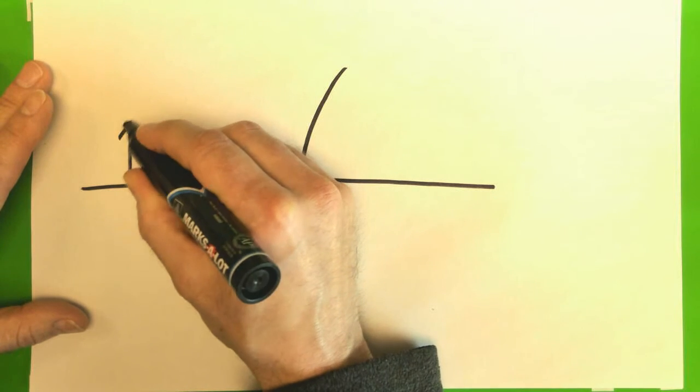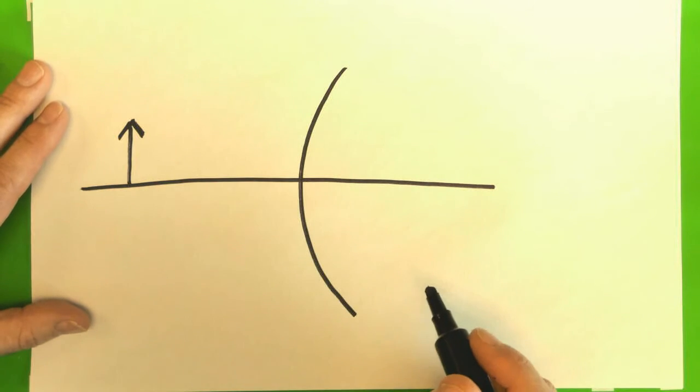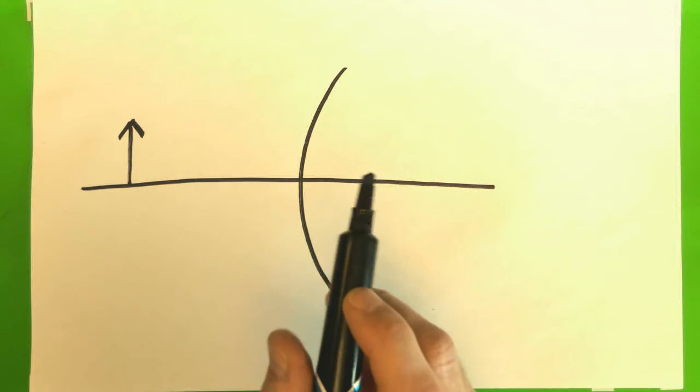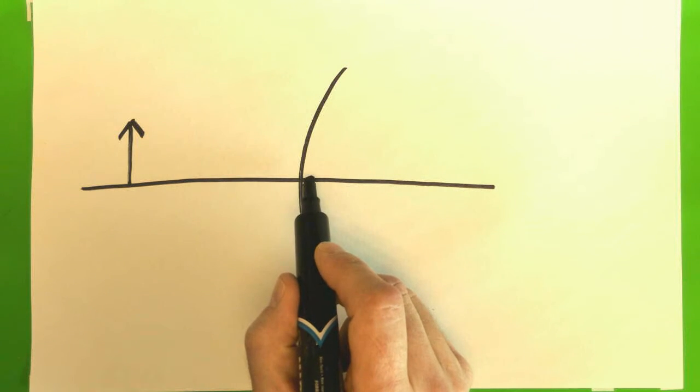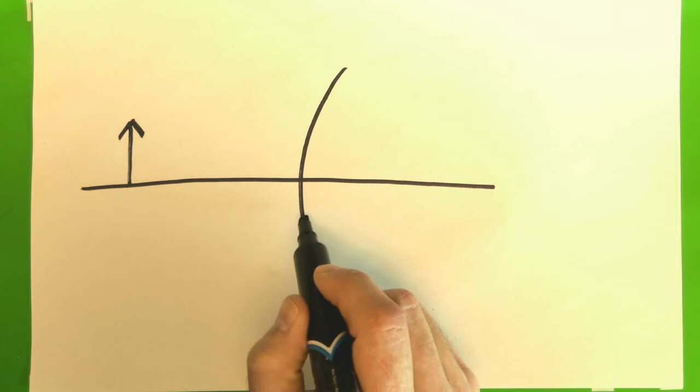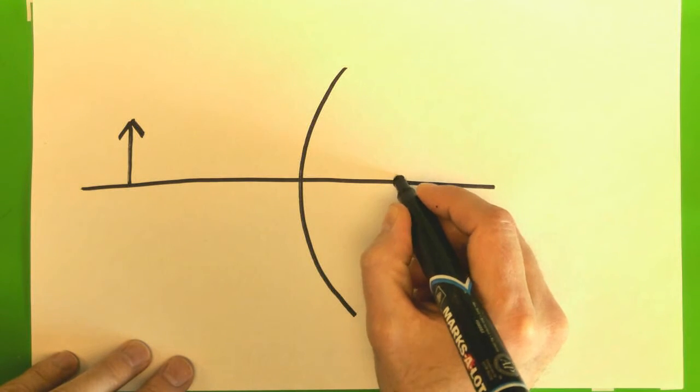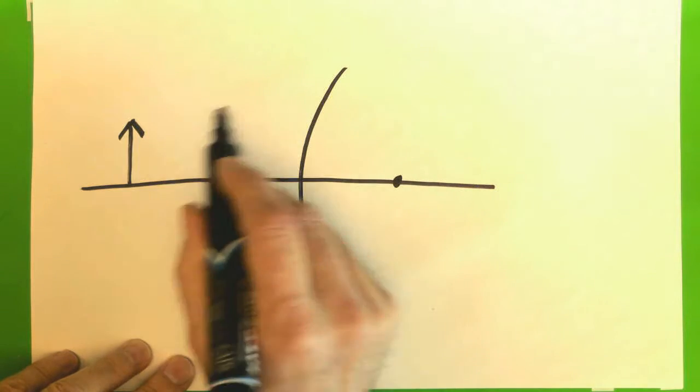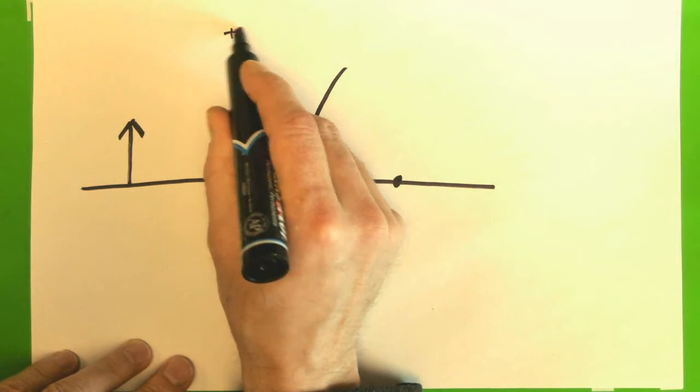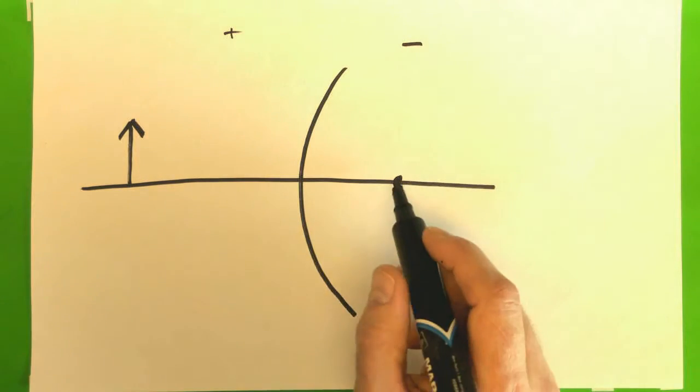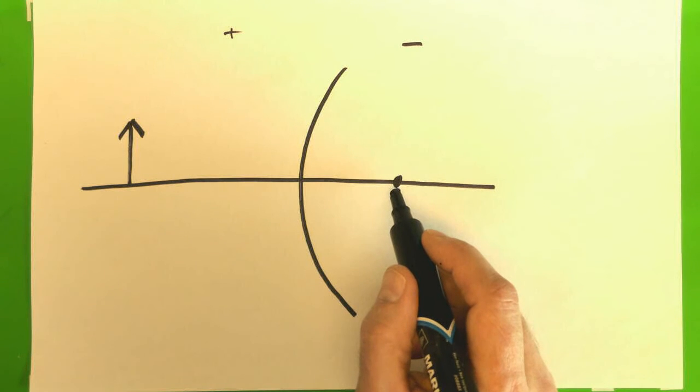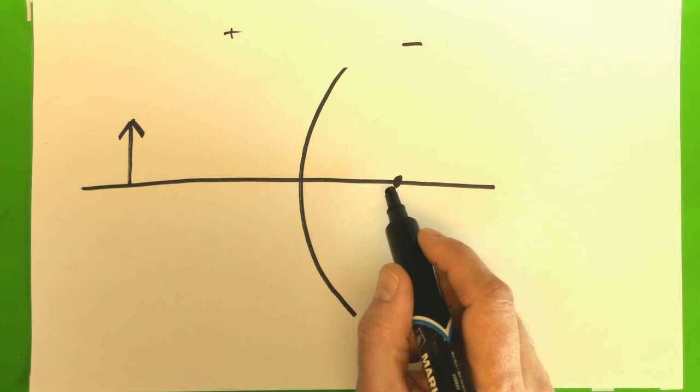If our object is over here, we traditionally put it on the left. The radius of curvature of this mirror is somewhere over here on the side. Since it's a mirror, light only exists over here. So this is the positive side, that's the negative side. That means this is a negative mirror, or its radius is negative, so its focal length is negative.